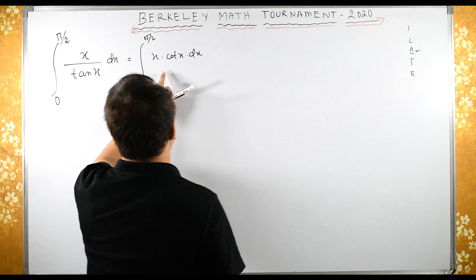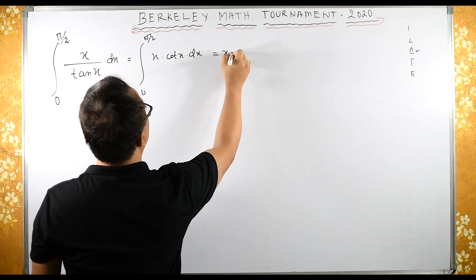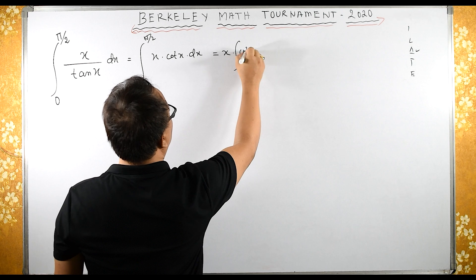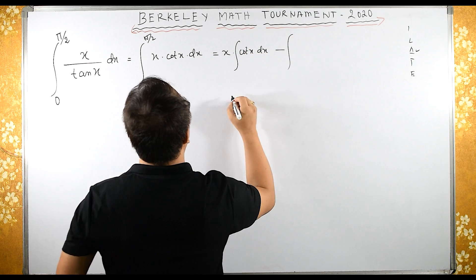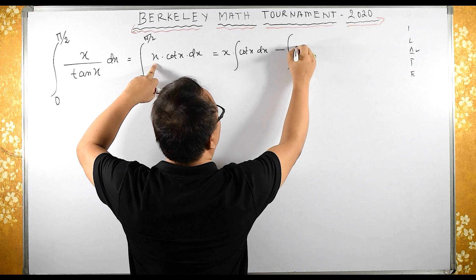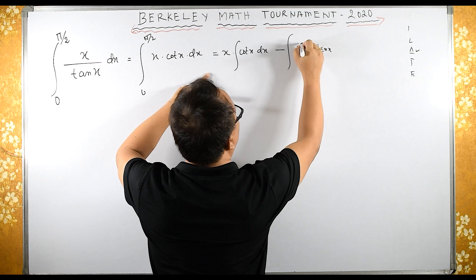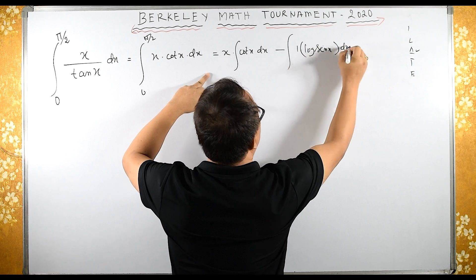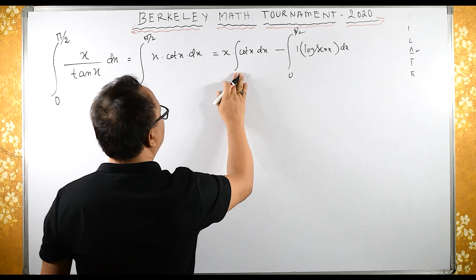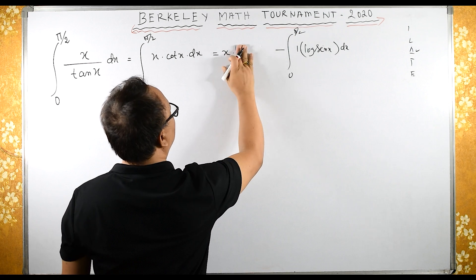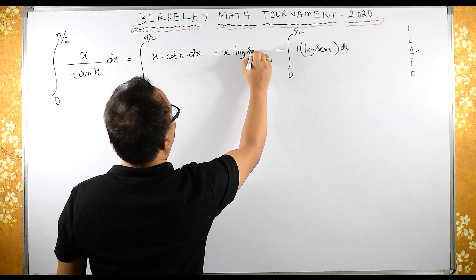Integration by parts says: I choose the algebraic function x as the first function. So this equals x times the integral of cot x dx, minus the integral of [d/dx of x] times log(sin x) dx. Here, the integral of cot x is log(sin x), with limits from 0 to π/2.